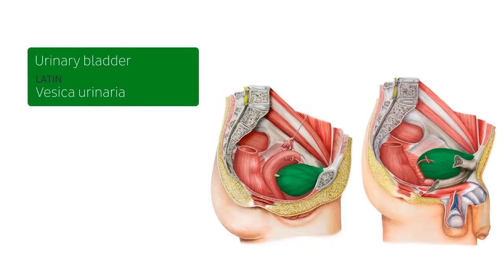The urinary bladder is a hollow muscular distensible organ of the urogenital system, and it's located inferior to the peritoneum within the lesser pelvis and rests on the pelvic floor.